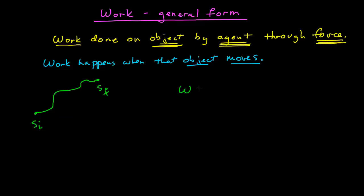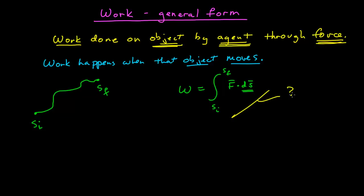The general form of that work is equal to the integral from my initial position to my final position of the force dot ds — this differential identified by a vector. Our problem today is to understand what this means. This is called a line integral, and if you've had multivariable calculus, that's all about calculating these sorts of things. We're not going to be doing complicated line integrals in this course, but I do want to explore qualitatively what this means and then relate it to the type of work calculations that we are going to do.